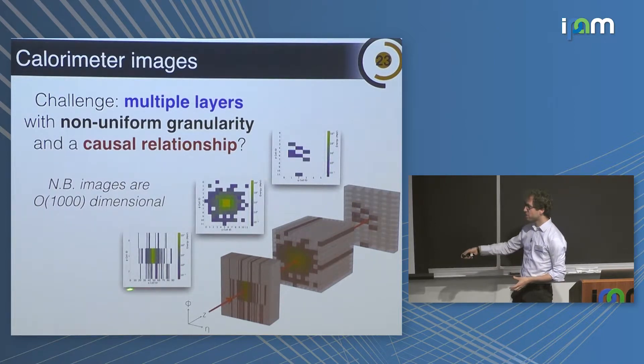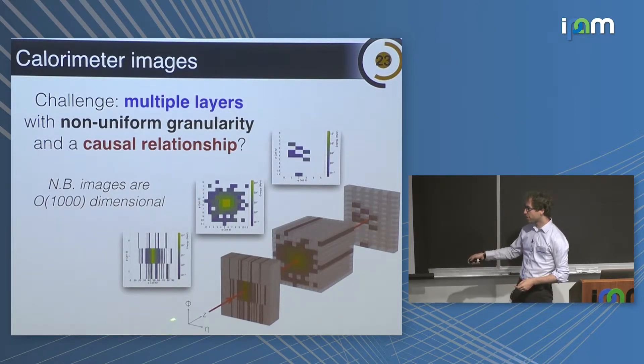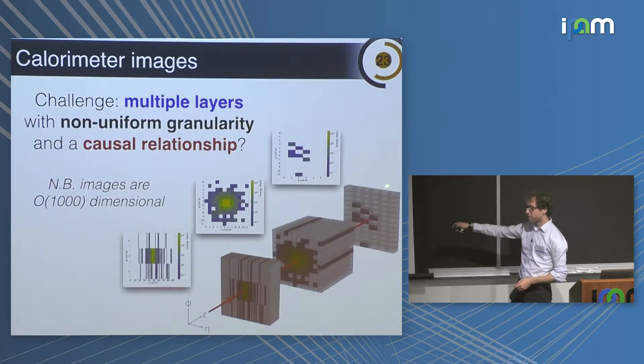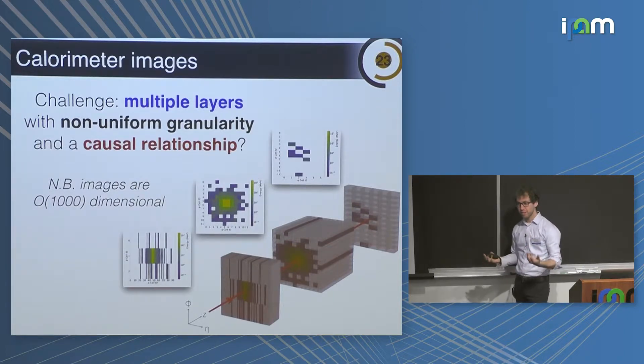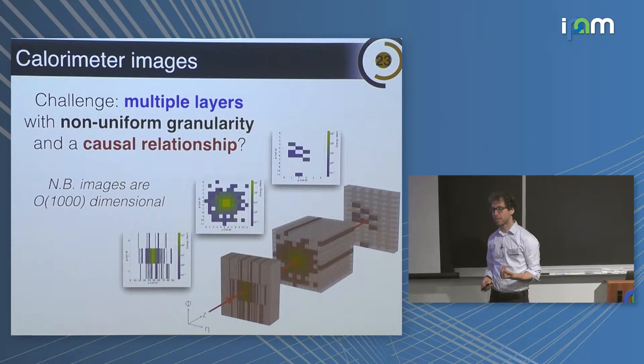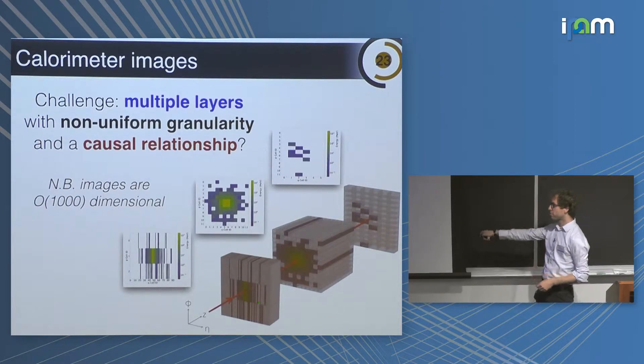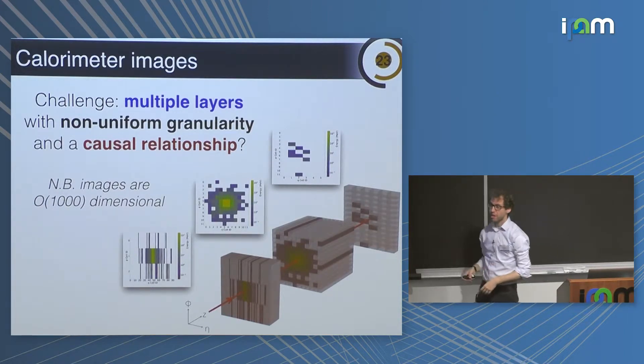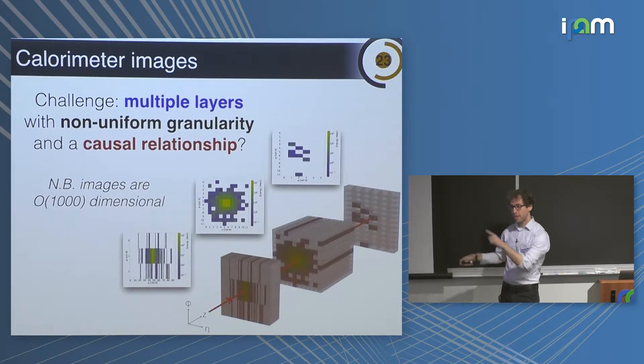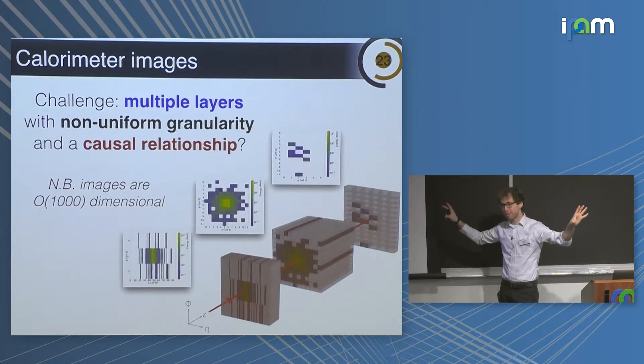However, they're not like regular images because our calorimeter is not a single image. It's actually multiple images. Our detector is a series of cylindrical shells. So you can think of each of these as a piece of those shells. So we have multiple images. They don't all have the same granularity, which is to say I have images with different pixel sizes. For instance, in this case, the innermost layer has a pixel size which is like 100 times smaller than the one behind it. Also, there's a causal structure. So particles are moving from here to there. It's more like a small movie where each frame has a different pixel size.